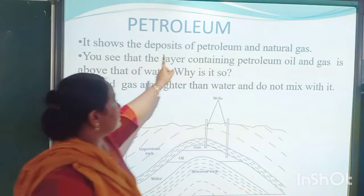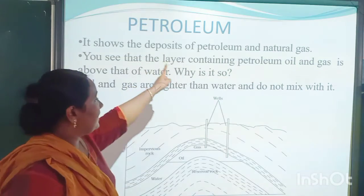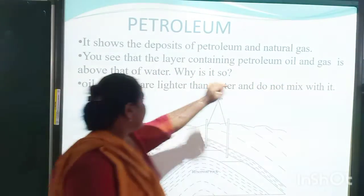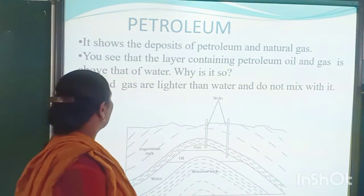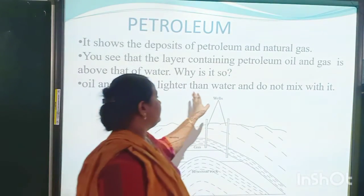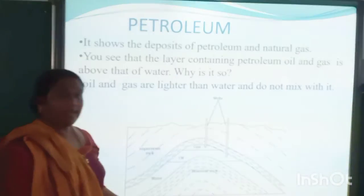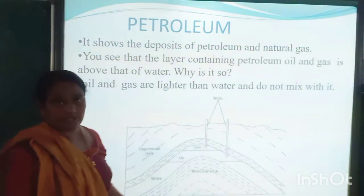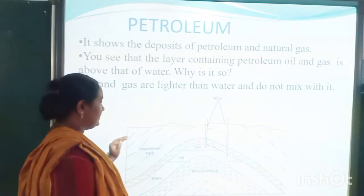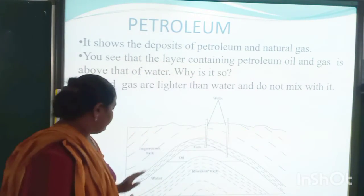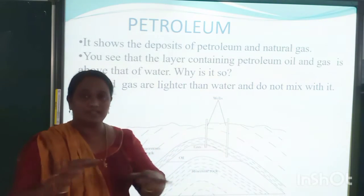This diagram shows the deposits of petroleum and natural gas. You can see that the layer containing petroleum — oil and gas — is above the water layer. Oil and gas are lighter than water and do not mix with water. This picture is there in your textbook itself; you can go through that. It shows the ocean or sea with the uppermost layer of soil.